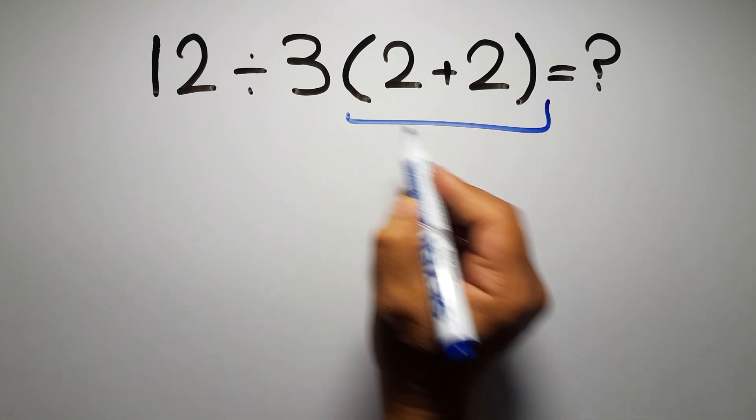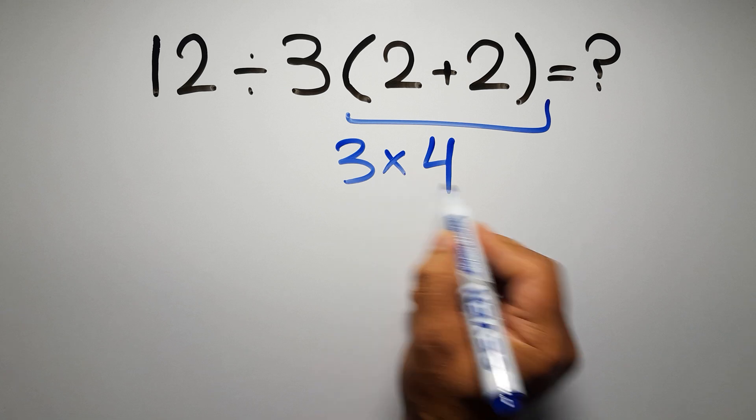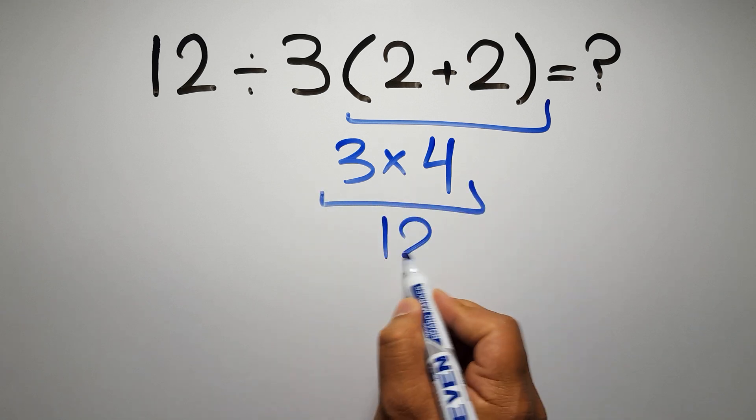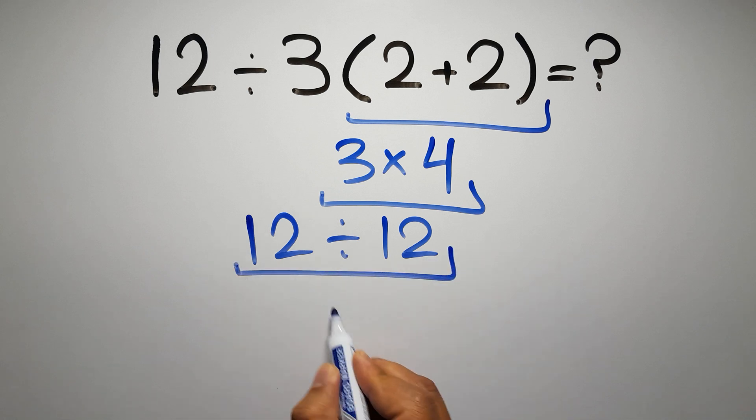2 plus 2 gives us 4, and 3 times 4 is just 12, so 12 divided by 12 gives us 1. But this answer is not correct.